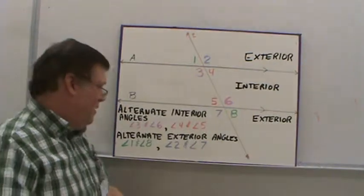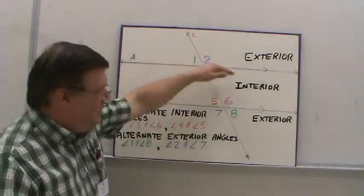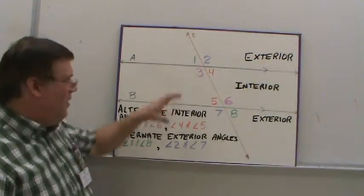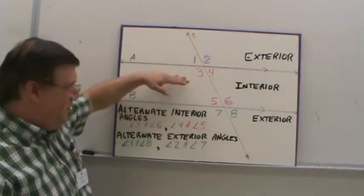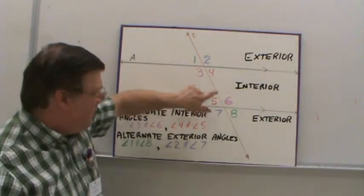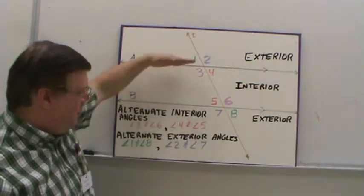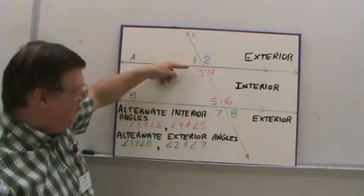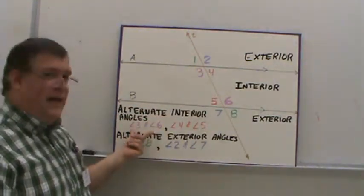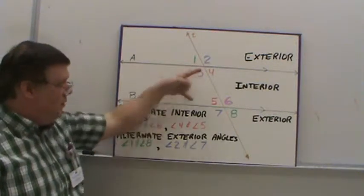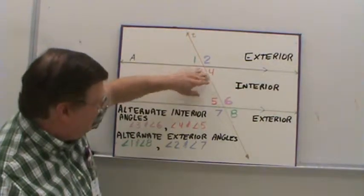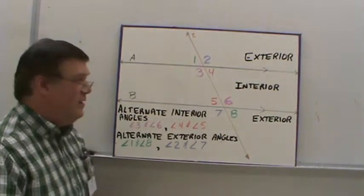The next vocabulary is alternate interior angles. We talked about the interior and exterior. Alternate interior angles are inside the parallel lines, so it's got to be one of these four, and they are pairs. Alternate also means they have to be on opposite sides of the transversal and on opposite parallel lines. Angle three is on line A; angle six is on line B. They are on opposite sides of transversal T. That makes angle three and angle six alternate interior angles. So are angles four and five — you'd find that four and five are going to be equal, and three and six are going to be equal.